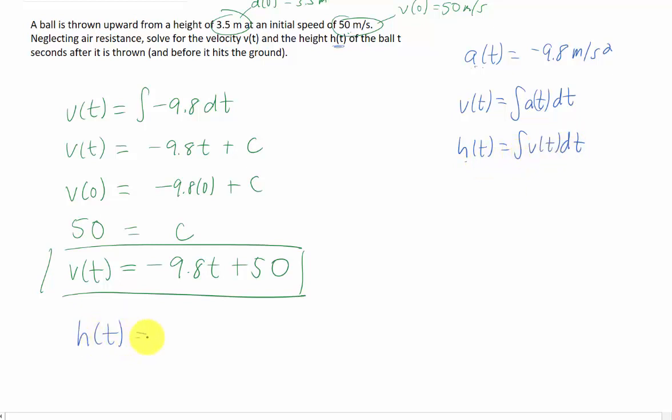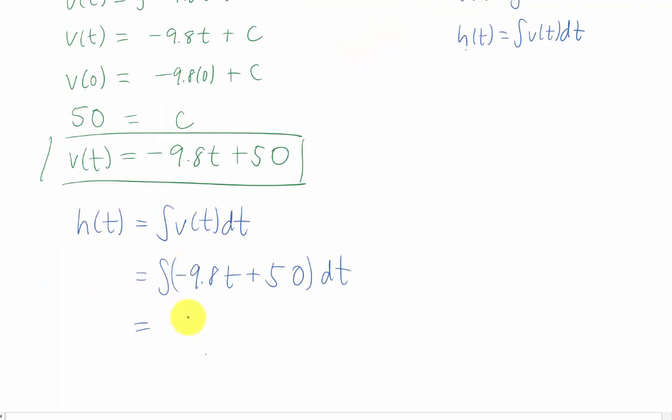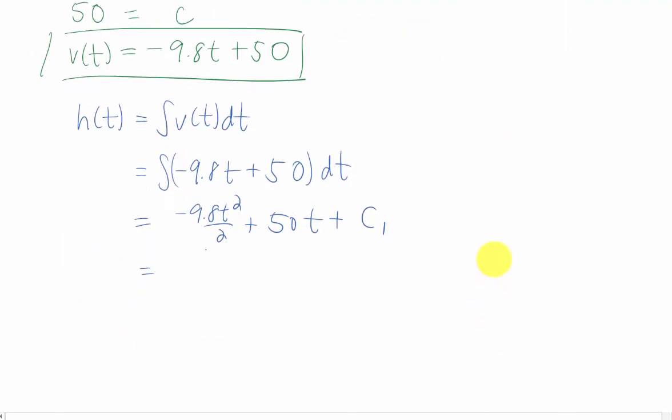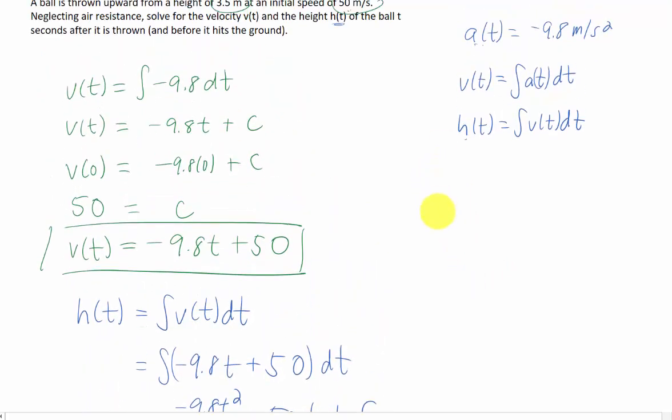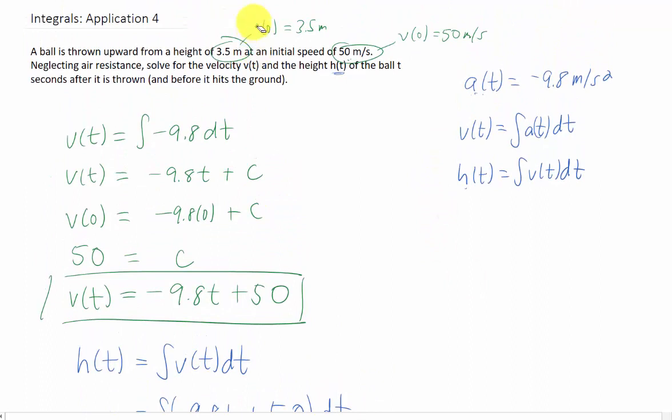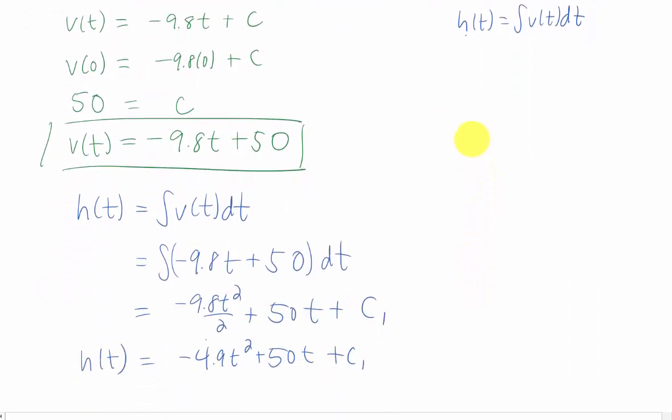We can integrate using the power rule and we can do a step of simplification here. That gives us a function for height, but it has a constant in it that we can find using our initial condition. Our initial height, we should have called this h(0), is 3.5 meters.